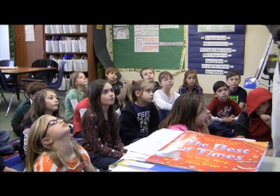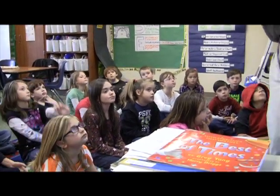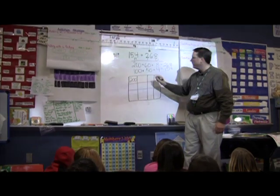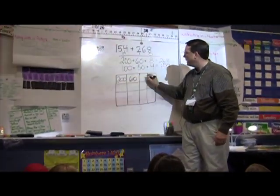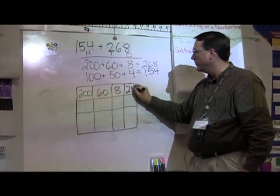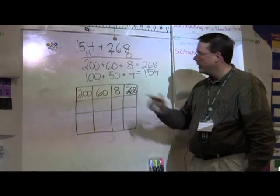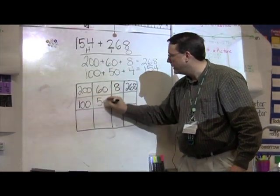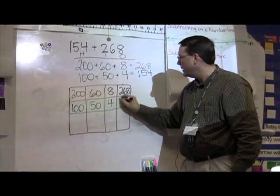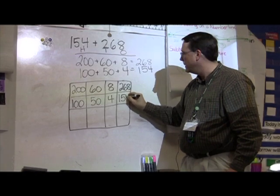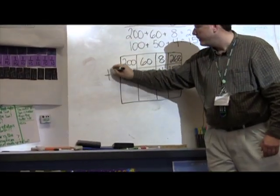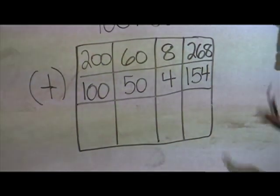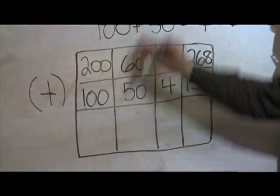So we've taken that out to its expanded form. But now I want to show you a strategy that you can use. It's called a number puzzle. So what you're going to do is we're going to draw a box. 60 and the 8. And we know that's 268. I'm going to do the same thing here. 150 and 4 is 154. We know that the operation we're doing is addition.